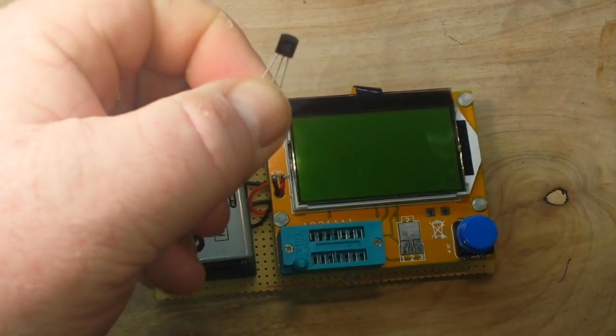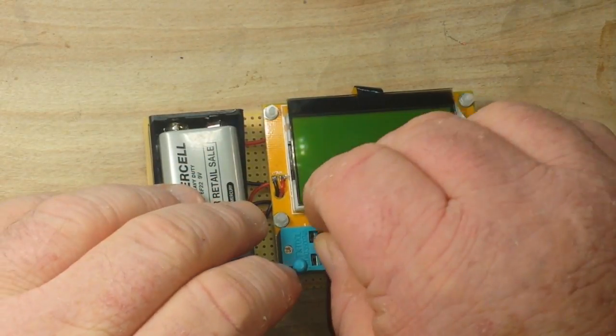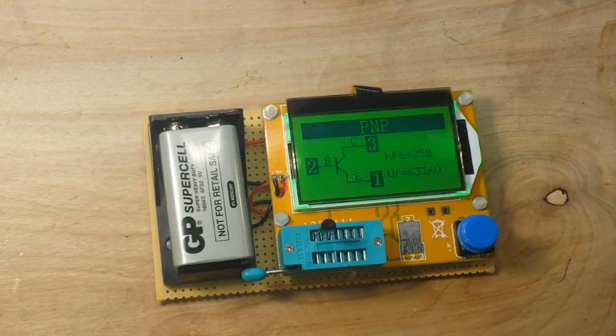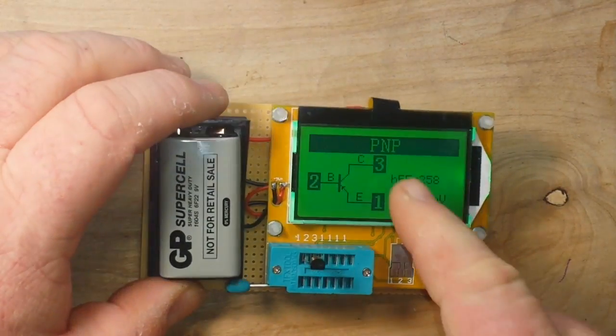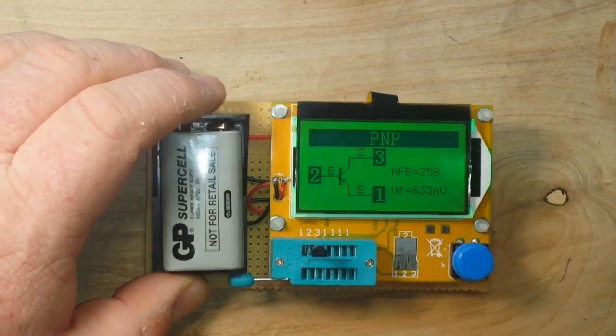Now you take your component, whatever it is, there's a little PNP transistor. You put it in here, press the button, you wait a few seconds, presto magico, it tells you it's a PNP emitter on pin one, base on pin two, collector on pin three.